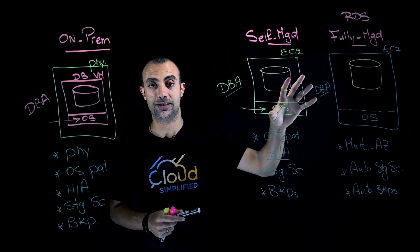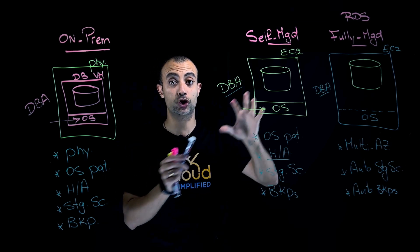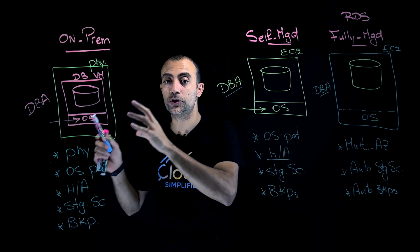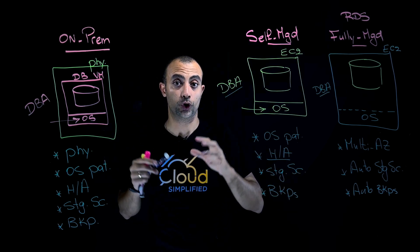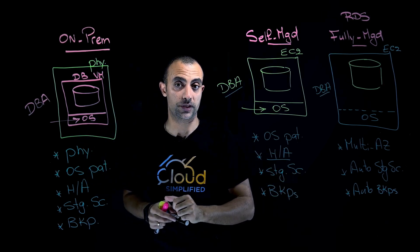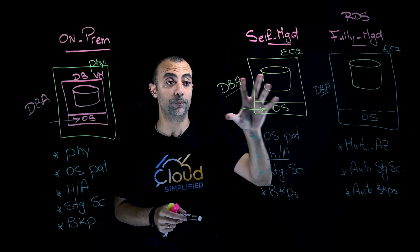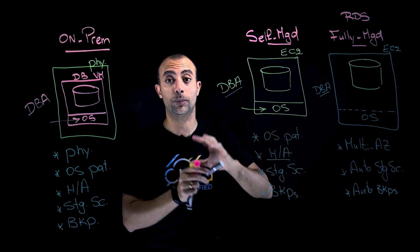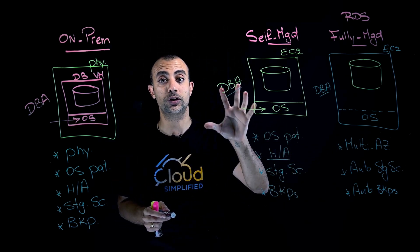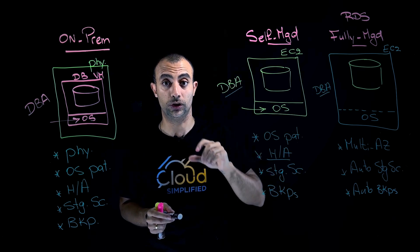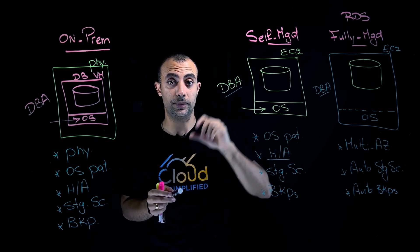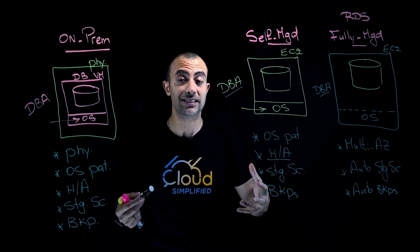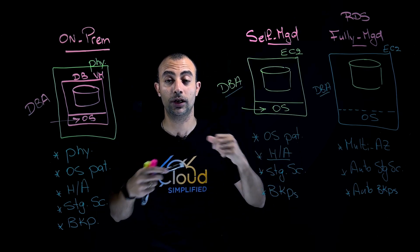In the fully managed RDS option, most of the tasks the database administrator used to handle — whether on-premise or in a self-managed cloud setup — are completely eliminated. The DBA can now focus more on innovation, on the database itself, on improving queries, and on enhancing application performance.